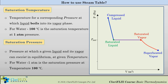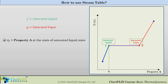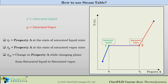Let us see a diagram where property A is on the x-axis. There are two states mentioned: saturated liquid and saturated vapor. From the convention, F is denoted for saturated liquid and G for saturated vapor. Af is the property A at the state of saturated liquid, Ag is the property A at the state of saturated vapor, and Afg is the change in property A while changing phase from saturated liquid to saturated vapor.